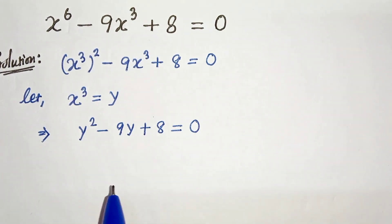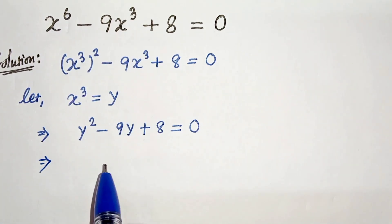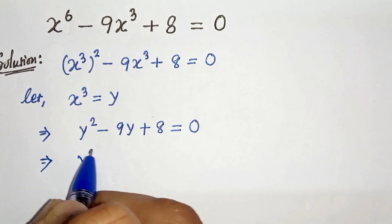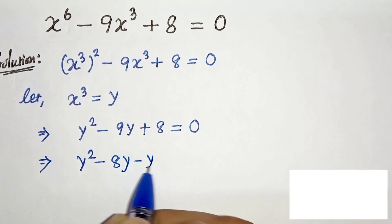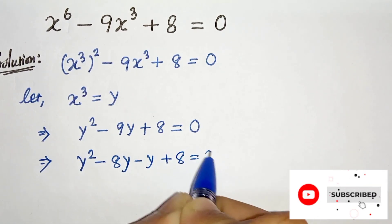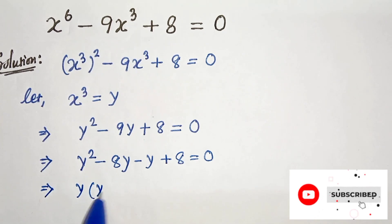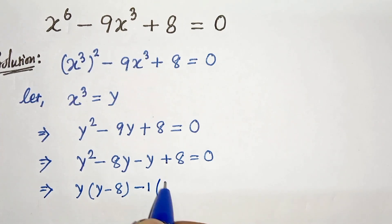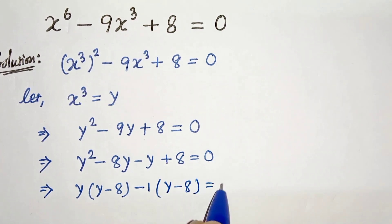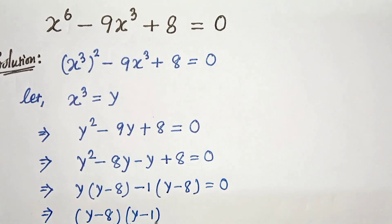Now we have to factorize this. The product is 8 and the sum is minus 9. So we can write y squared minus 9y as y squared minus 8y minus y plus 8 equals to 0. In the next step we can take out common factor y, giving y minus 8, and here we take out common factor minus 1, giving y minus 8 equals to 0. So taking out common factor y minus 8, we get y minus 8 times y minus 1 equals to 0.